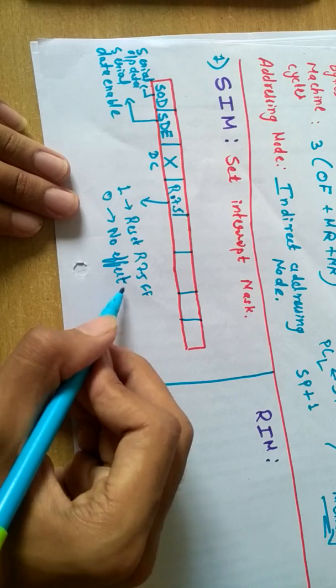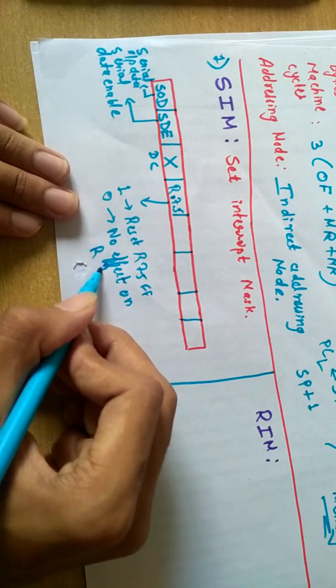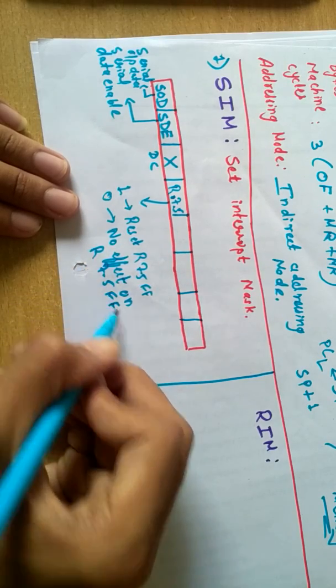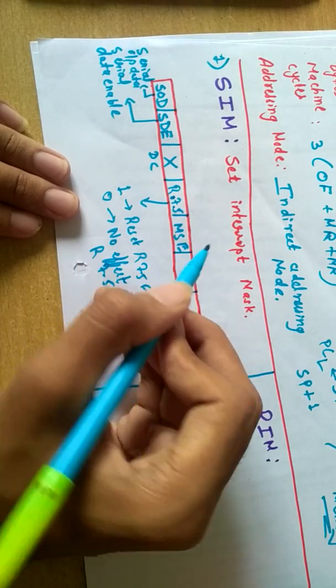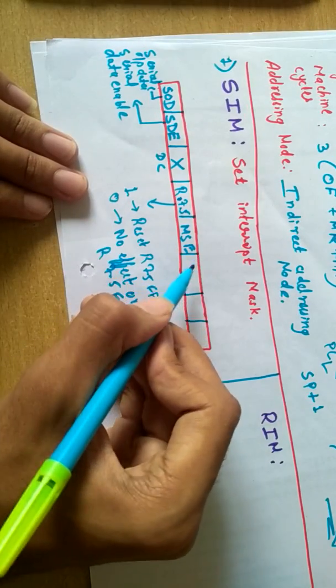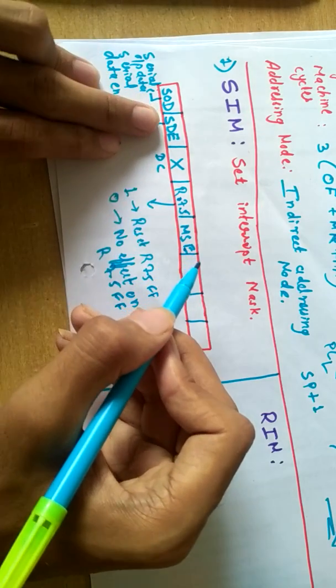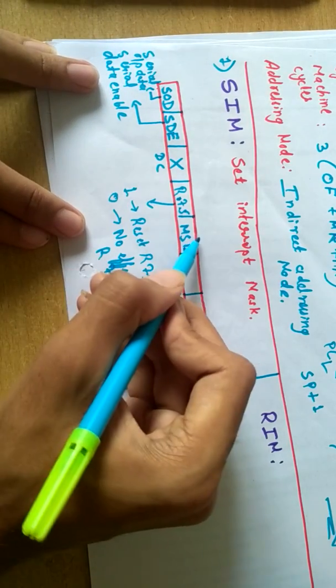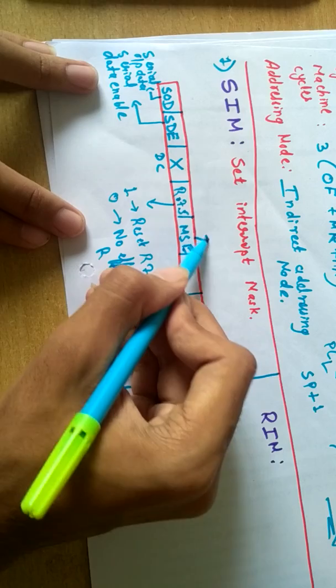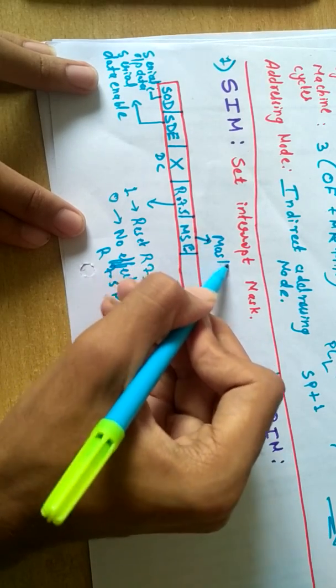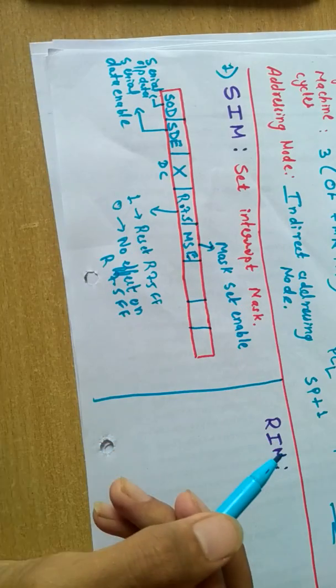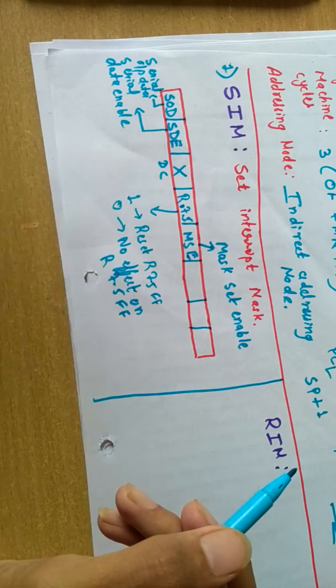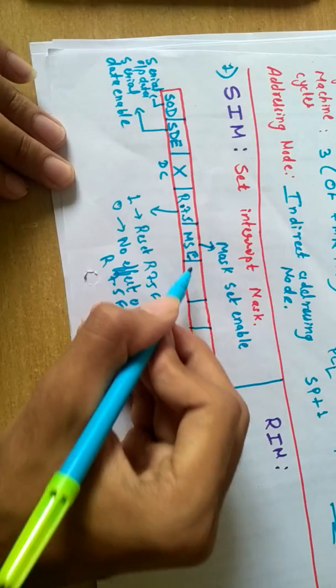Then we have MSE, that is Mask Set Enable, same as SDE Serial Data Enable. This is Mask Set Enable. This bit should be one in order to mask or unmask any of the interrupts.